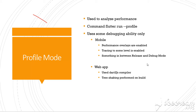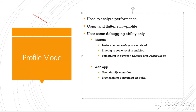In profile mode, the dart2JS compiler is used — the same compiler used for release mode — whereas debug mode uses the Dart dev compiler. The command is `flutter run --profile`. It retains some debugging ability, mobile performance overlays are enabled, tracing is enabled to some level, and it sits somewhere in between release and debug mode. Tree shaking is also performed on build.